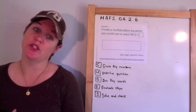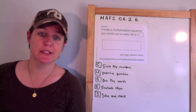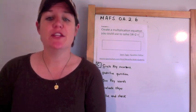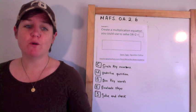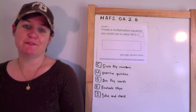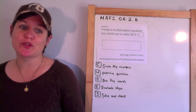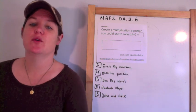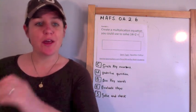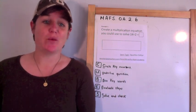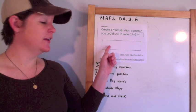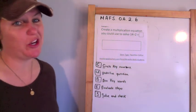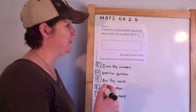Let's start with example one. It says: create a multiplication equation that you could use to solve 14 divided by 2 equals the unknown number. This is an equation editor problem, so the only thing we are going to be working on is plugging in our answer.